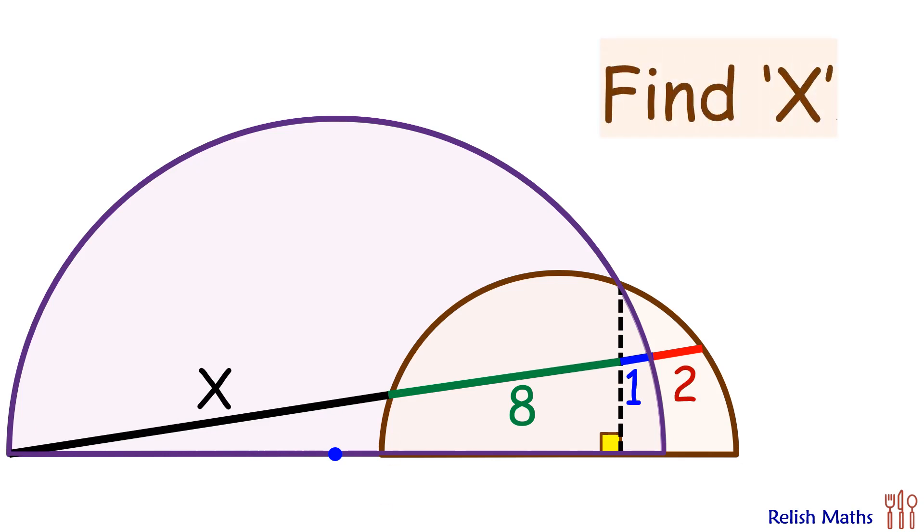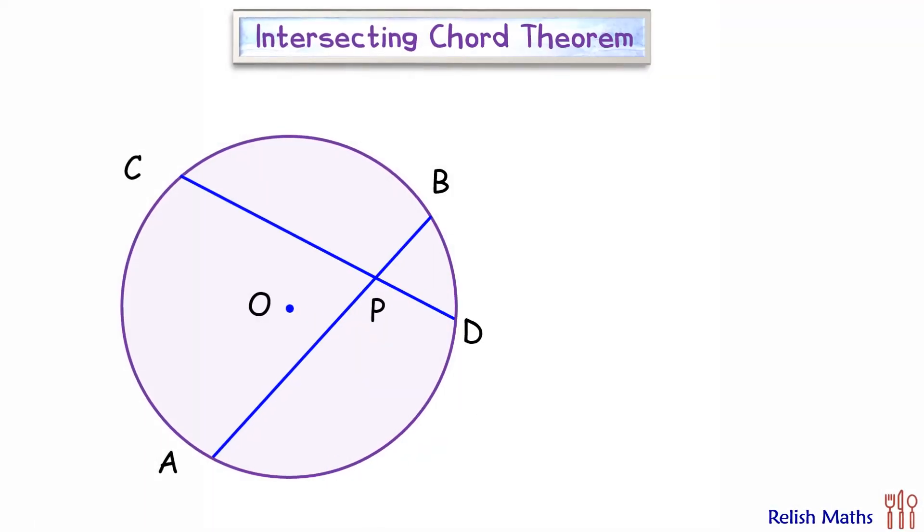The solution for this question is very straight and simple, for which we will be using the intersecting chord theorem, which states that if two chords in a circle are intersecting at a point P, then PA times PB will be equal to PC times PD. The proof of same we have discussed in video number 16.